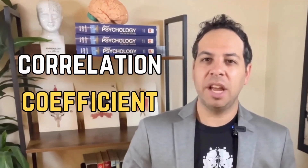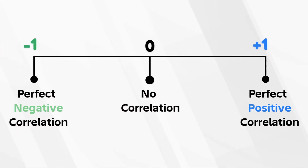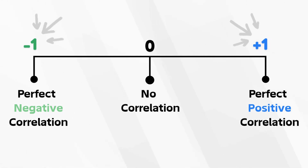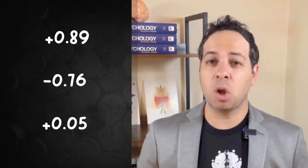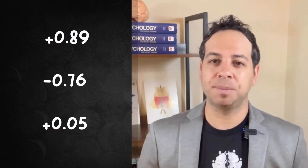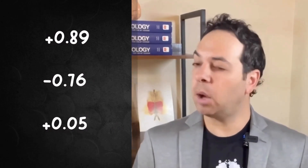Now let's talk about strength — how closely those two variables are related. Psychologists use something called a correlation coefficient to measure this. It's a number between negative 1.0 and positive 1.0. The closer a number is to 1.0, whether it's negative or positive, the stronger the correlation. The closer to zero, the weaker the correlation. So take a moment — what would you say about the strength and direction of the following correlation coefficients? Go ahead, pause the video here and try it out.